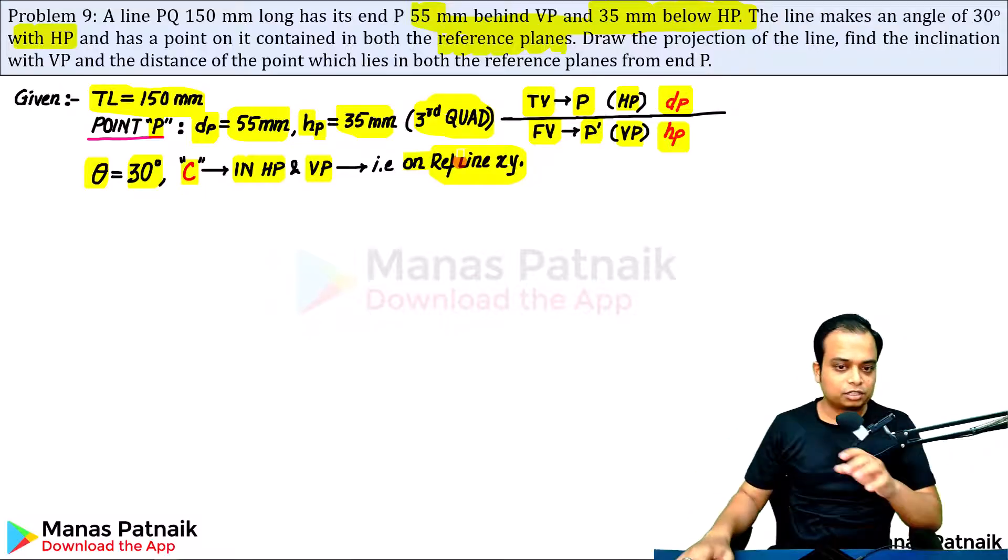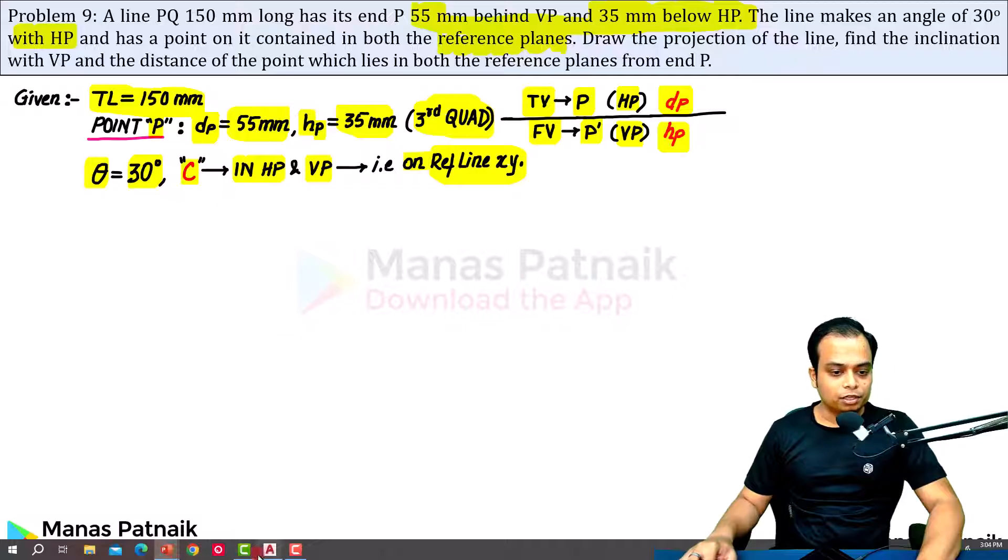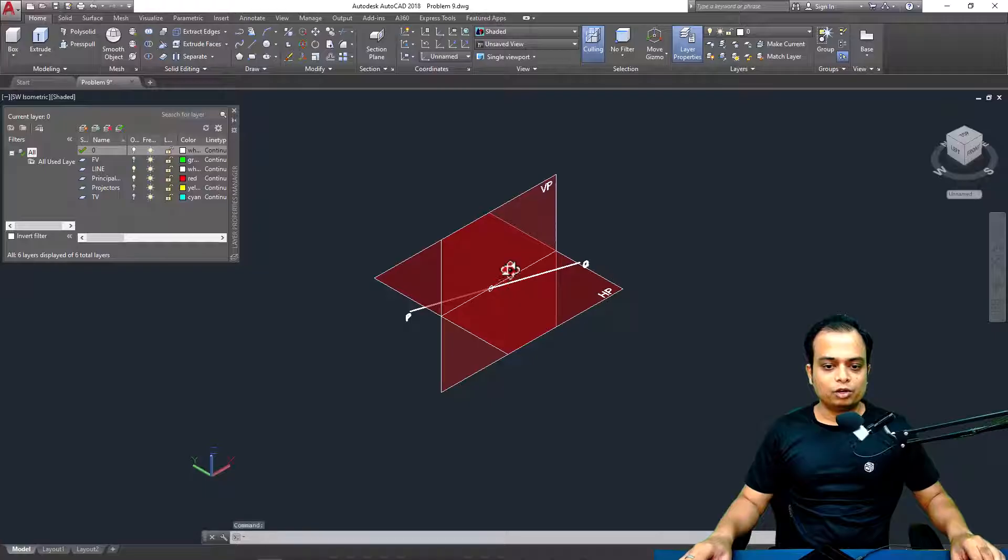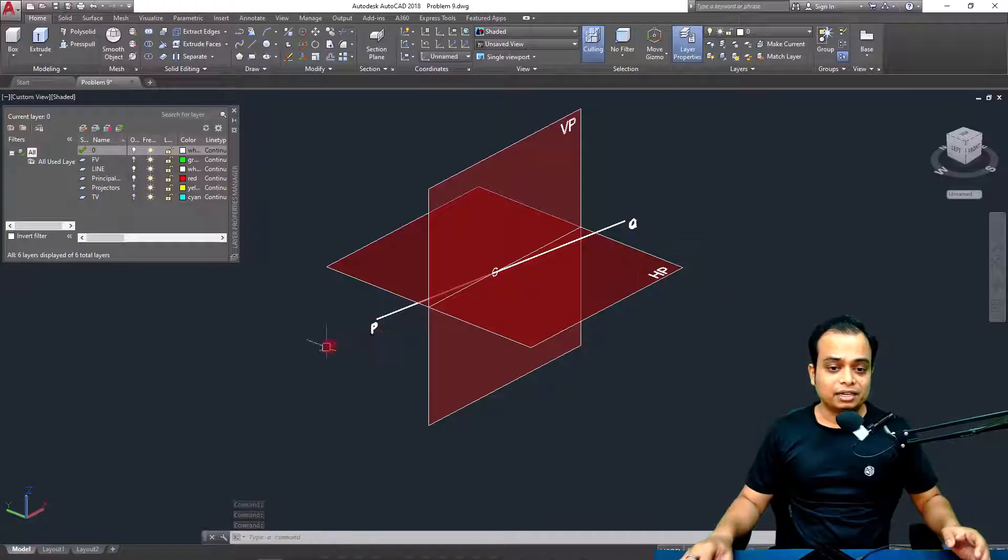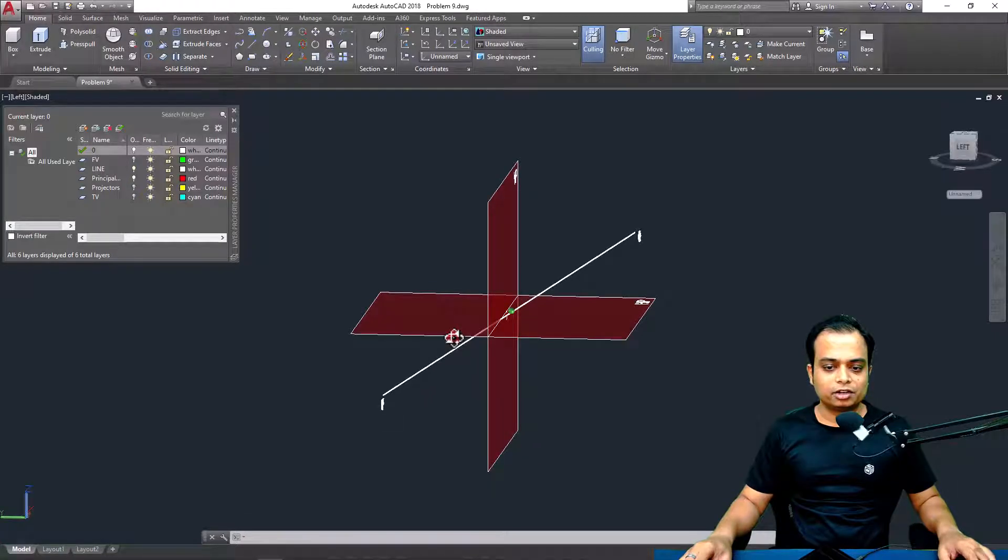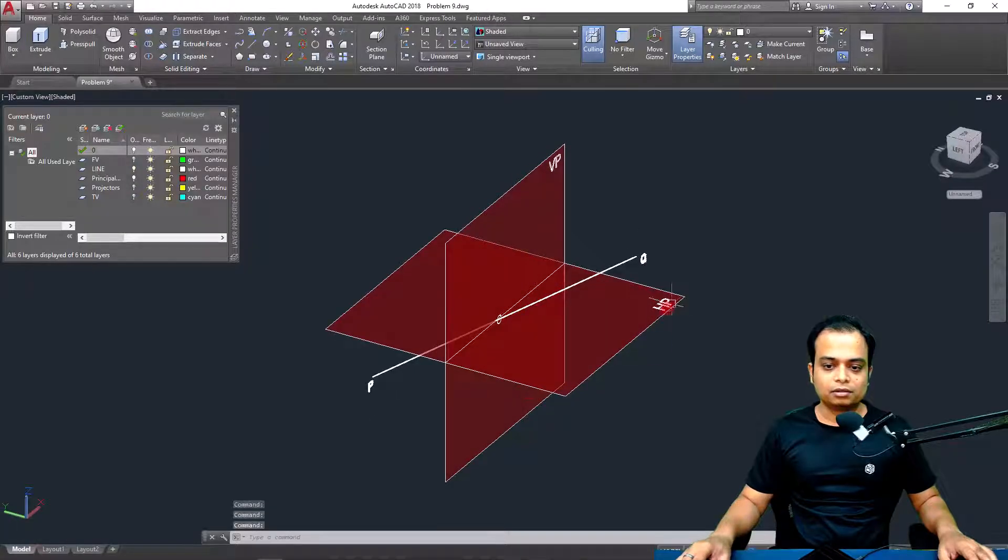Let me take you to AutoCAD first. Let me explain to you how all of these things are going to work out in 3D. Take a look. This is the problem. We know very well that one end of the line is in the third quadrant, while the other has to be... If the line is inclined to HP, this is the third quadrant. This is end P. If the line is inclined to HP, draw a horizontal line or this is the HP. That's the horizontal plane.